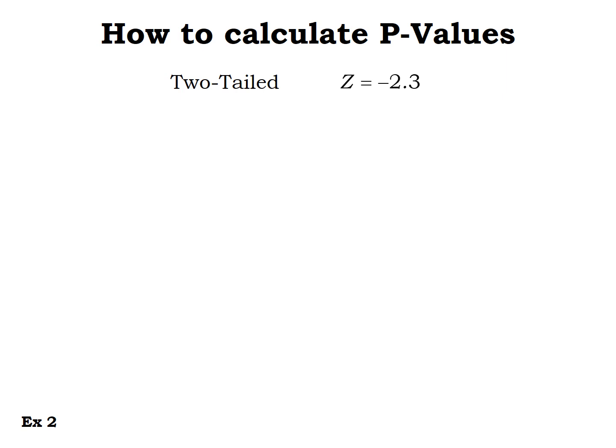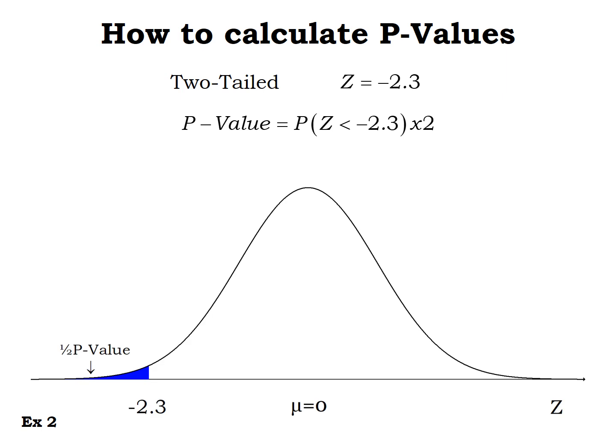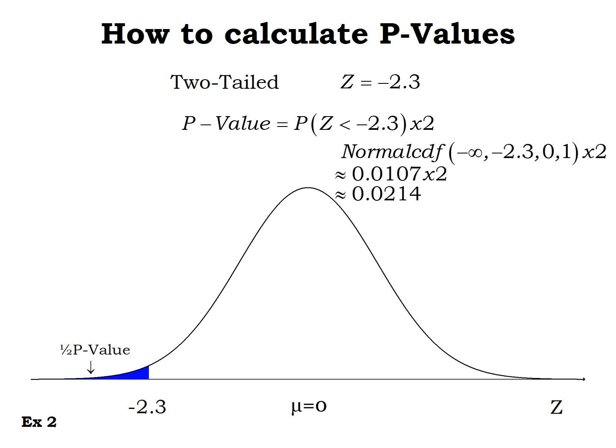For a two-tailed z-test with negative z-score negative 2.3, that negative z-score is in the left tail. We find the area in the left tail, which represents half the p-value, and multiply by two. Using the normal CDF, we get 0.0107, then double it to get a p-value of 0.0214.